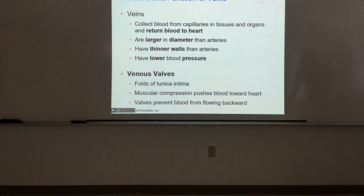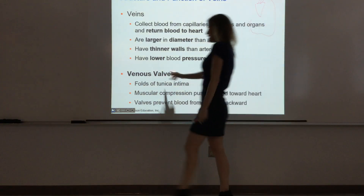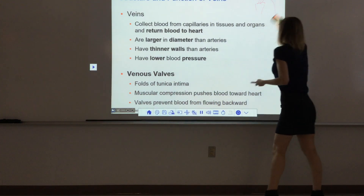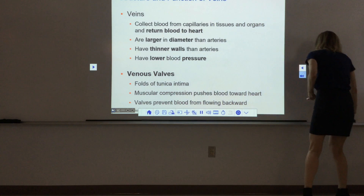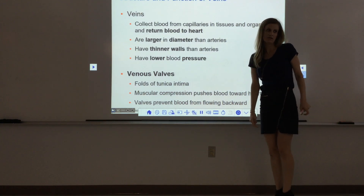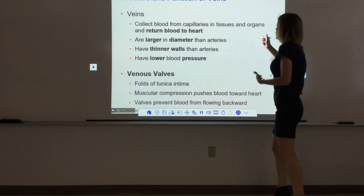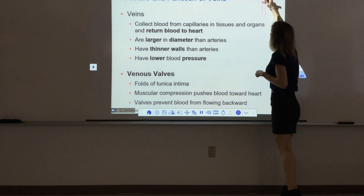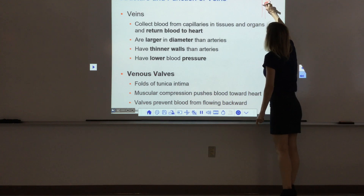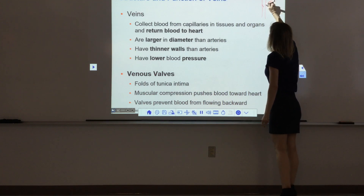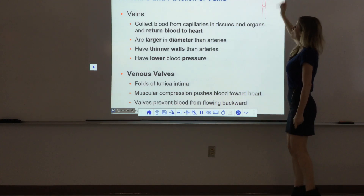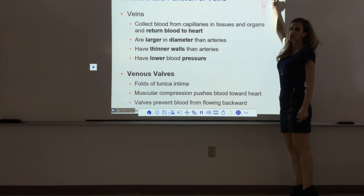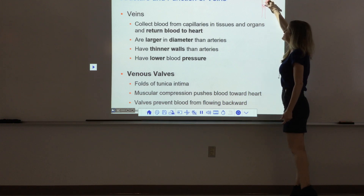Another feature that distinguishes some veins is the presence of one-way valves. This isn't in all veins, but we do see one-way valves primarily in the deep veins of the legs — not the superficial ones, but the deeper veins. The tunica intima forms little folds that project inward on each side, creating a one-way valve that controls blood flow. These valves allow blood to travel up back toward the heart but won't let it drop back down backwards.